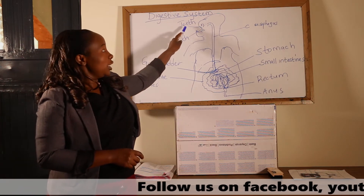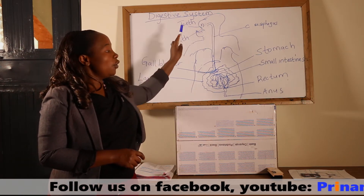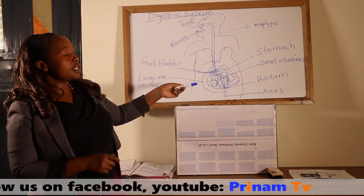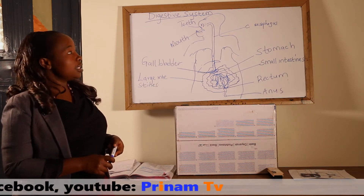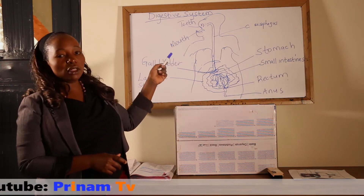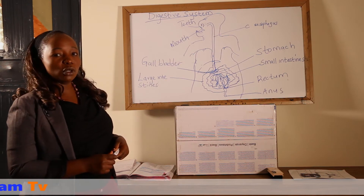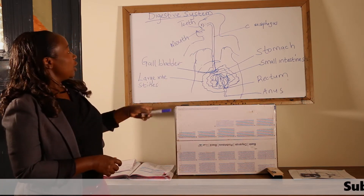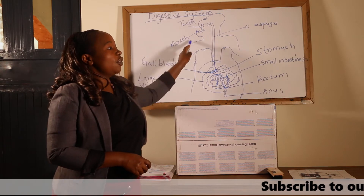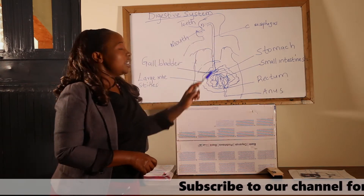Digestion of food starts from the mouth and ends in the small intestines. So this is the structure of the digestive system.